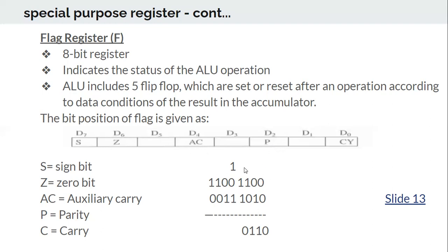Auxiliary carry is set when there is an overflow from the 4th bit position (bit 3, counting from 0). When there is such an overflow — for example, bits 1, 1, 0, and 1 produce a carry out of that nibble — the auxiliary carry bit is set to 1. The zero bit is set to 1 when the result of any operation is all zeros; otherwise it is 0.